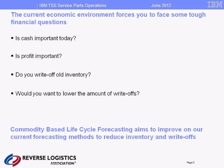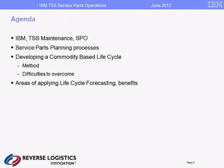Let me take you through the structure of the presentation. I'll talk a bit about IBM — which everybody probably knows — and about IBM's maintenance business and the position of the parts organization within it. Then I'll zoom in to the parts planning process where we apply commodity-based lifecycle forecasting: what it is, how you get it, how difficult it is to establish, and what you can do with it — how it can help you achieve the aims of less inventory and less scrap at the end of the lifecycle.